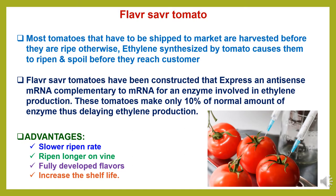Flavr Savr tomato is one of the great achievements of genetic engineering in agriculture. Most tomatoes have to be shipped to market or harvested before they are ripened; otherwise, ethylene synthesized by the tomato causes them to ripen and spoil before they reach customers. Flavr Savr tomatoes have been constructed to express an antisense mRNA complementary to the mRNA for the enzyme involved in ethylene production. These tomatoes make only 10% of the normal amount of enzyme by delaying ethylene production. Advantages include slower ripening rate, longer ripening on the vine, fully developed flavors, and increased shelf life.